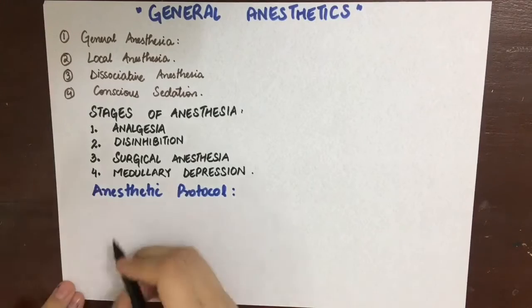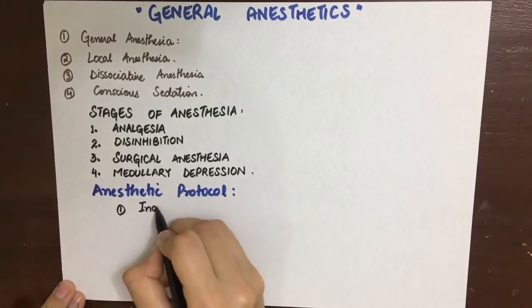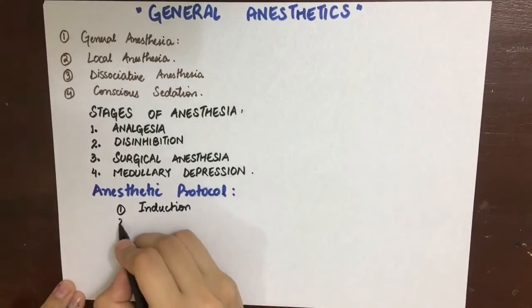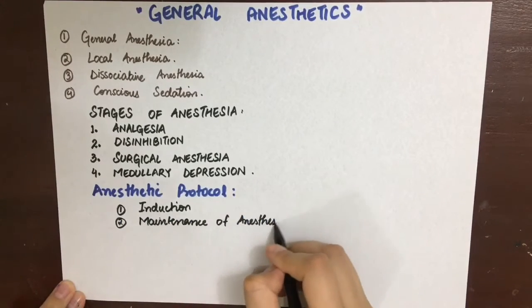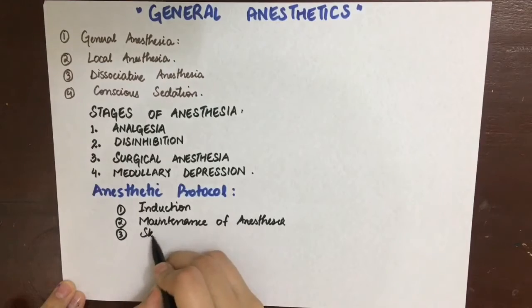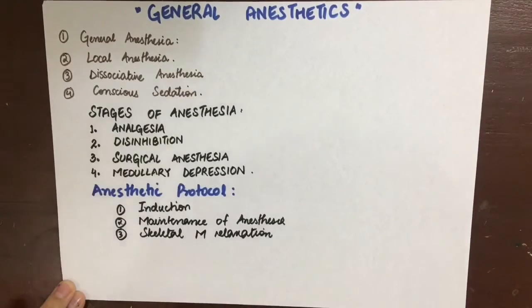To simplify, the anesthetic protocol includes five main things. Firstly, there is induction of anesthesia. Then there is the maintenance of anesthesia. Then there is skeletal muscle relaxation.